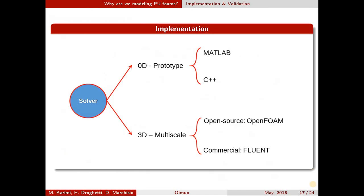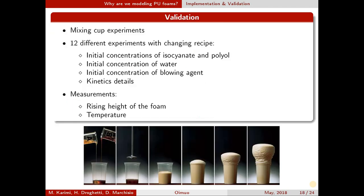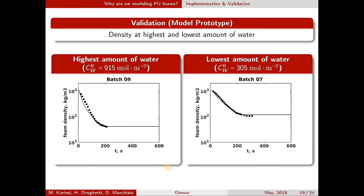Talking about implementation, we had two parallel workflows. We started with developing a prototype in Matlab and C++, then shifted everything toward OpenFOAM. Most of the time we were focused on developing the solver in OpenFOAM, and for comparison purposes we had everything in Fluent as well. In terms of validation, the typical test case for PU is the mixing cup — you add the two components and measure the rising height, which you can relate to the foam density, and you also measure the temperature. We had 12 different recipes, and we validated the solver with these 12 measurements. Here you can see the foam density versus time for two different cases: the lowest amount of water and the highest amount of water, and you can see the solver captures the experiments quite well.